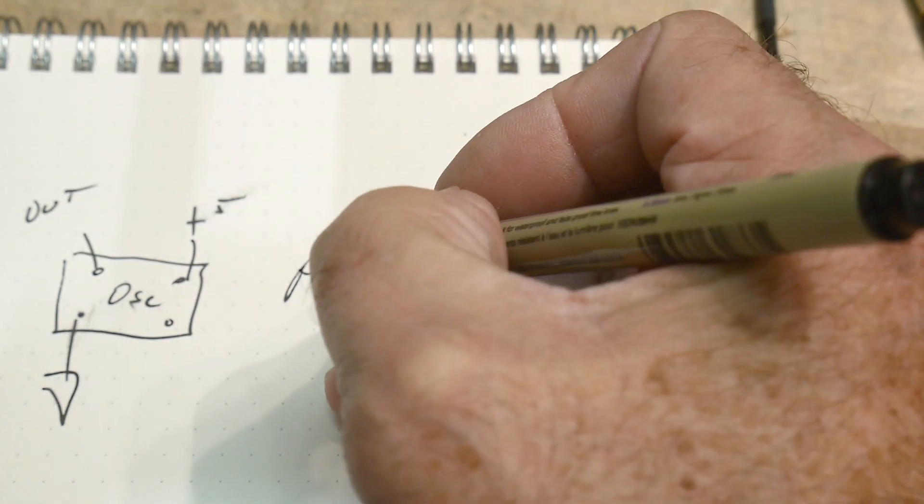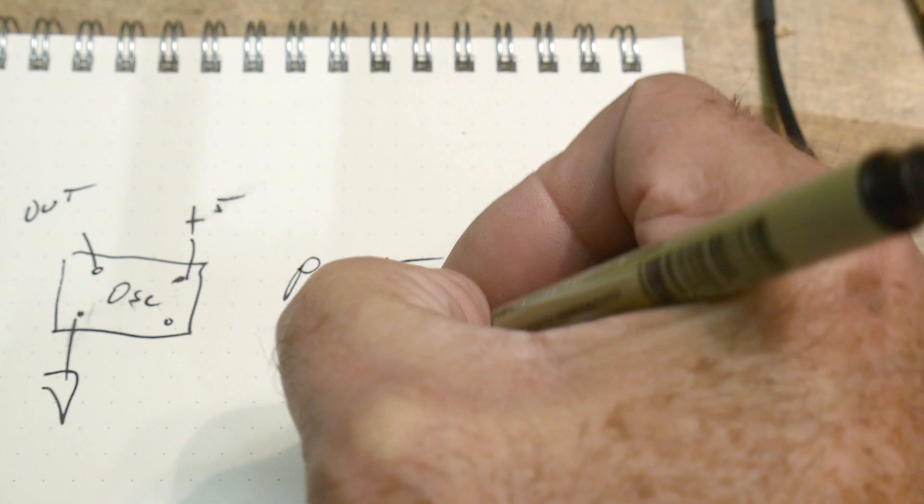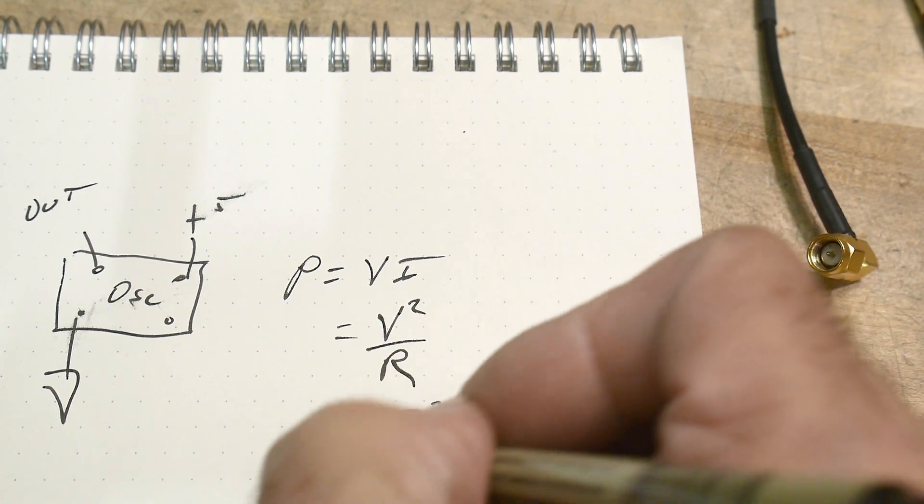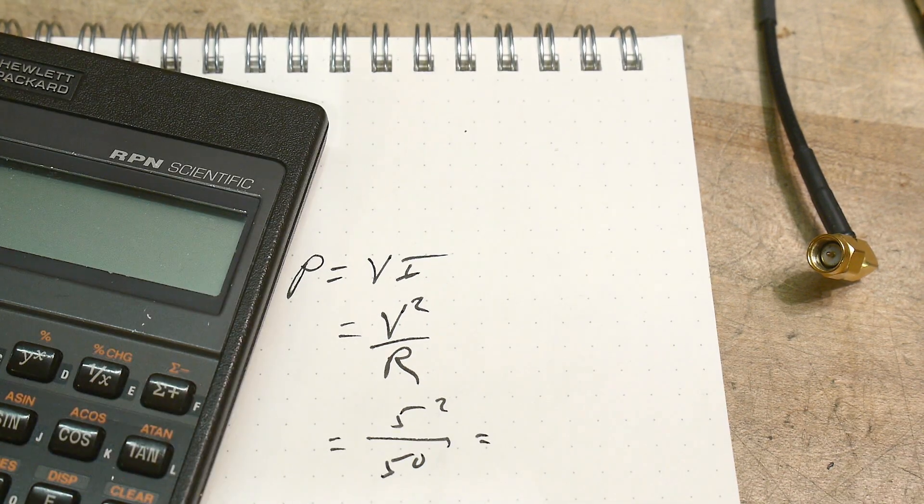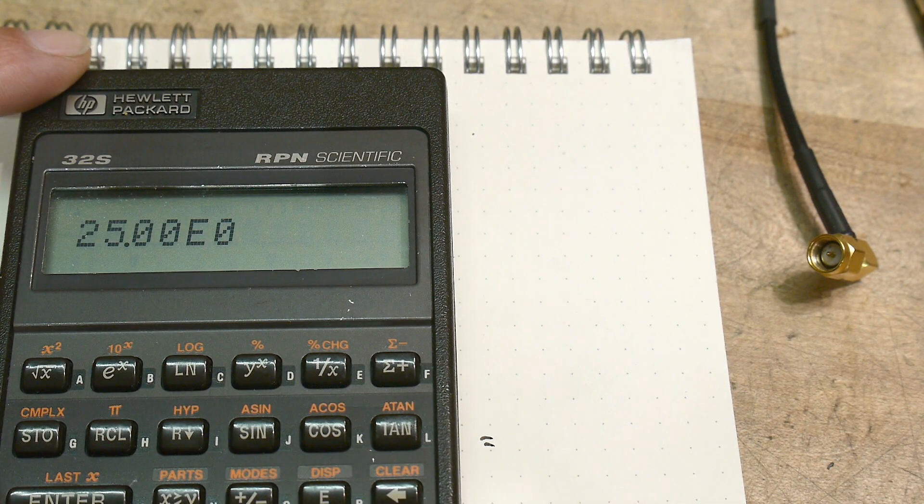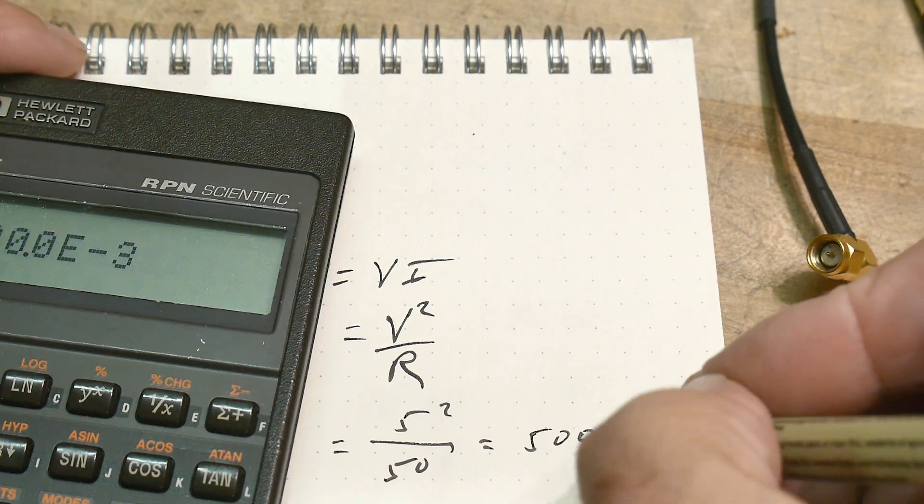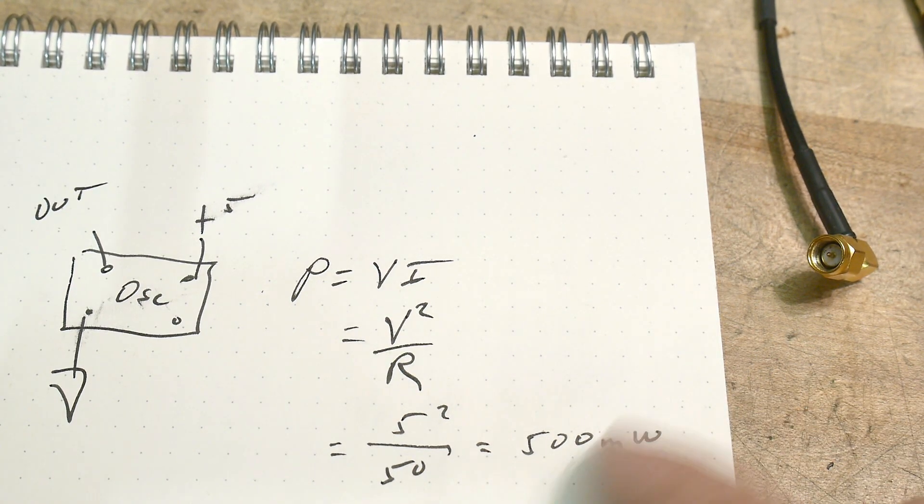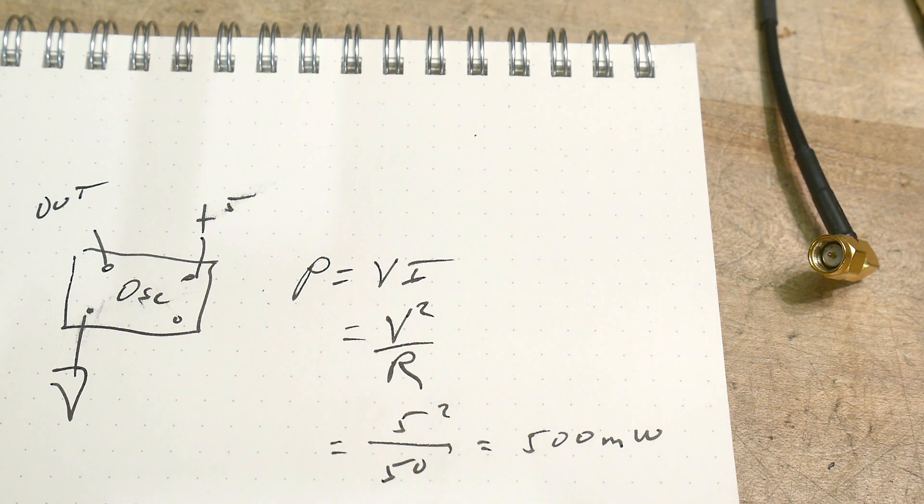Remember that power equals voltage times current. It's also equal to voltage squared over R. What do we have in this case? Well, we have five volts, and that's squared, and divided by ohms, well, we have 50 ohms. So let's do this calculation. We'll do five squared, that's 25, and we'll divide it by 50, and we get 500 milliwatts, that's a half a watt, and that's enough to kill a lot of spectrum analyzers.